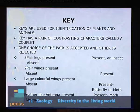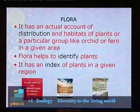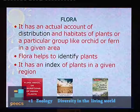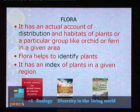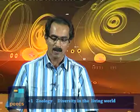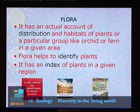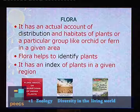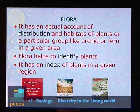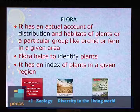You identify the organism as moth based on all these characters or statements. Look at a moth and butterfly — the antenna of moths is feather-like. Flora is another taxonomical aid. It is a publication giving an actual account of distribution and habitats of plants or a particular group like orchids or ferns in a given area. The flora also helps identify plants based on key points and has an index of plants in a given region. Examples include Flora Indica, the Flora of British India, and the Flora of Andhra Pradesh.